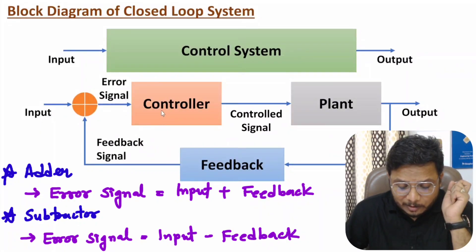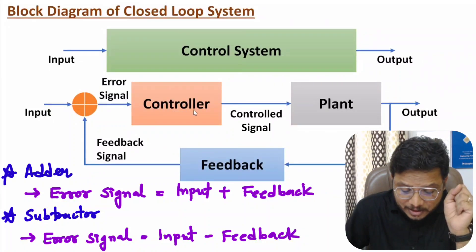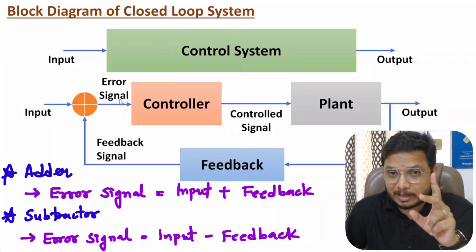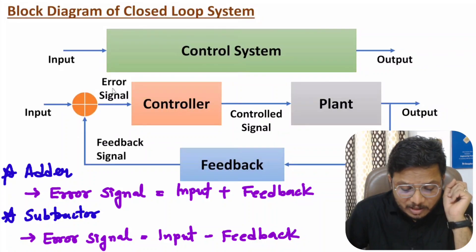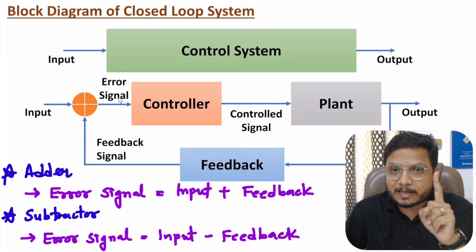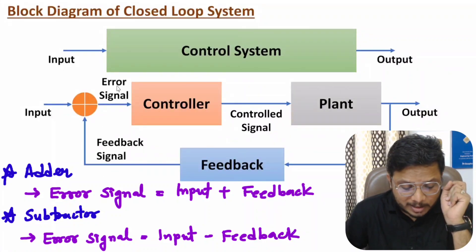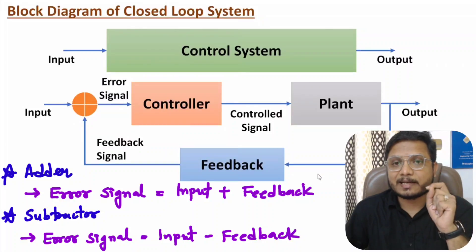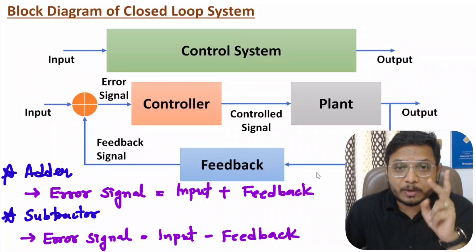The controller takes control action based on the error signal. With an open loop system, control action was based on the input signal. Now in a closed loop control system, control action is based on the error signal, and the error signal is a combination of input and feedback. Since feedback is based on output, one can say the action of the controller is based on both input and output.